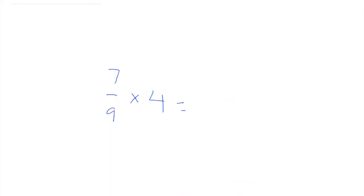Second problem: seven-ninths times four. Four times seven equals twenty-eight, and then nine times one equals nine. Now we're going to simplify, because we should not leave our answer like this. Always simplify so your problem will be correct.